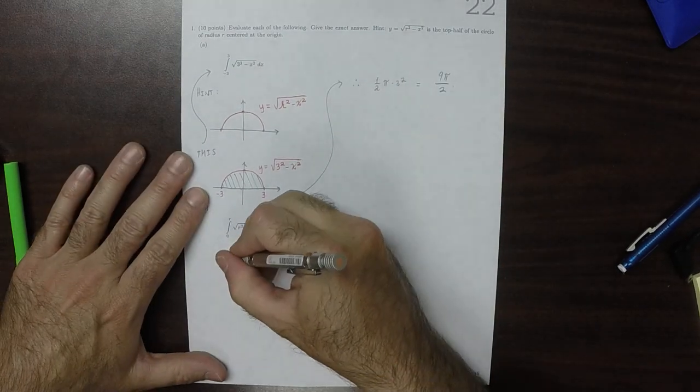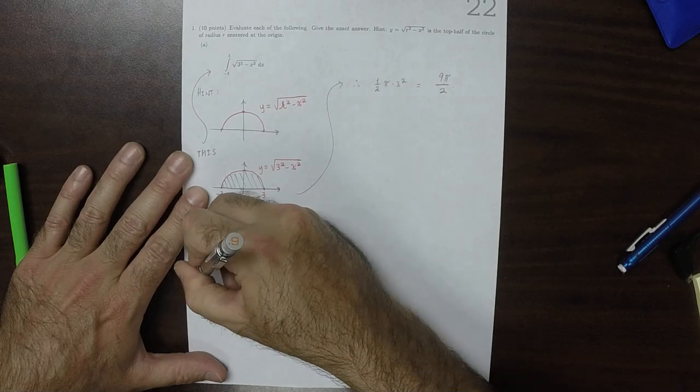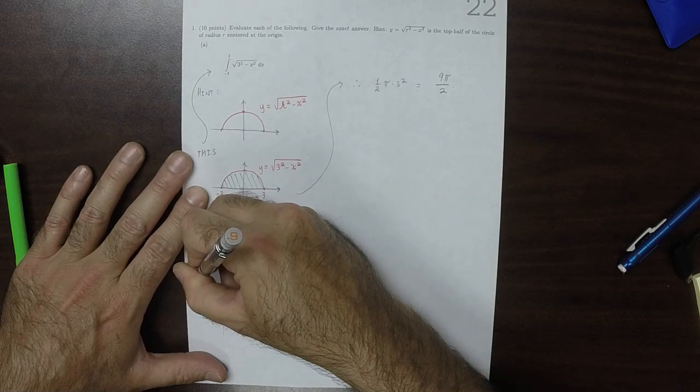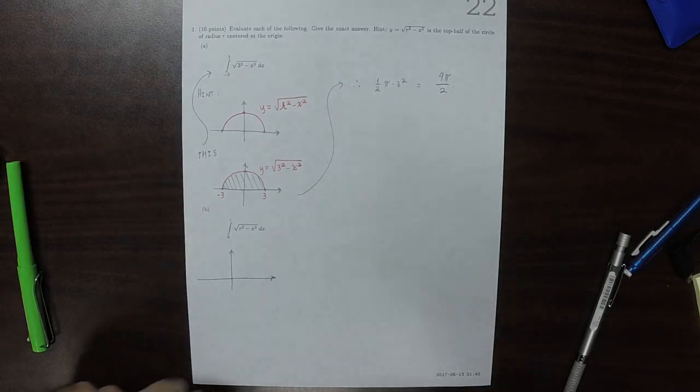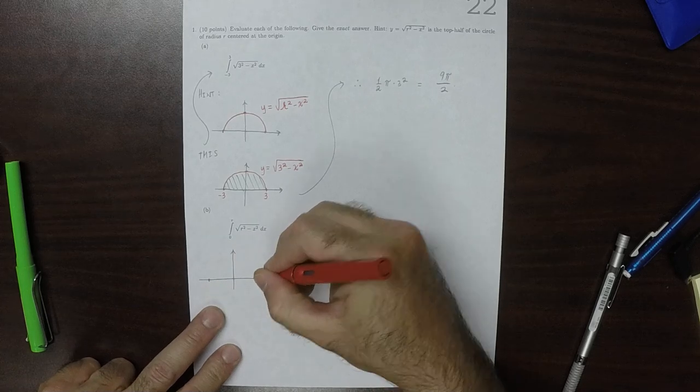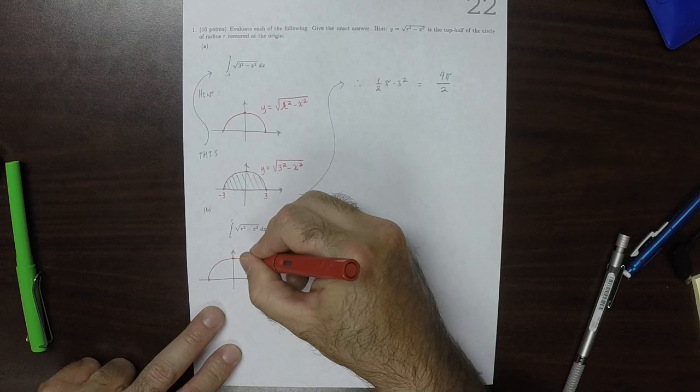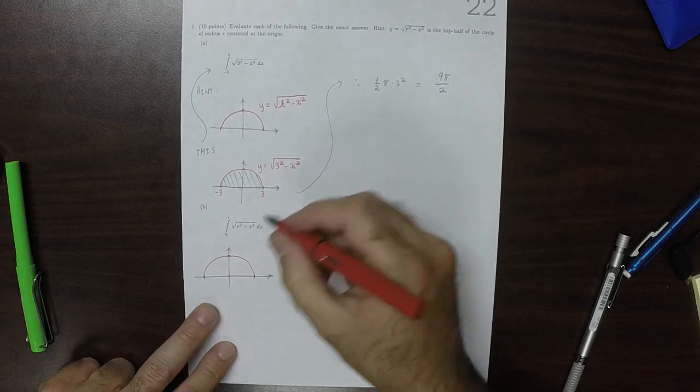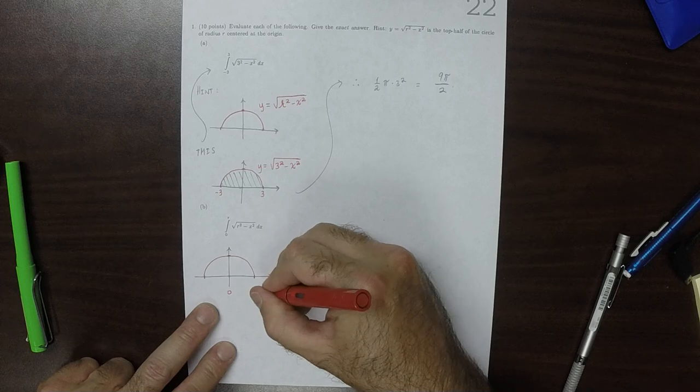Part B is slightly different, because we, again, have the semicircle. But we're only integrating from 0 to r, so from 0 to r.